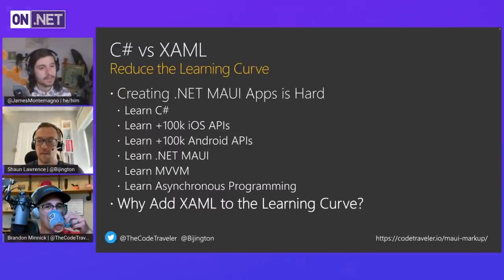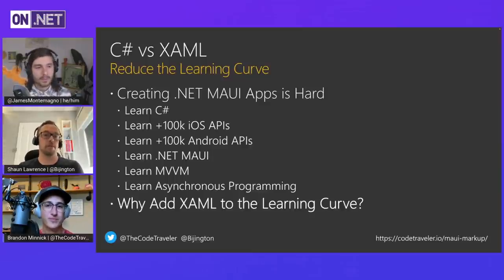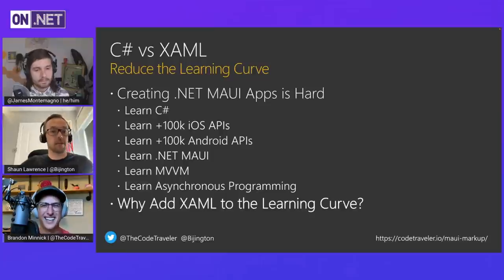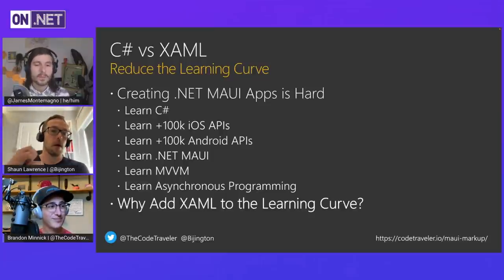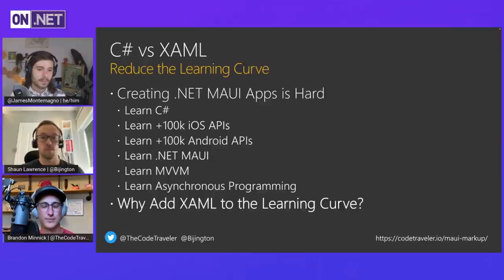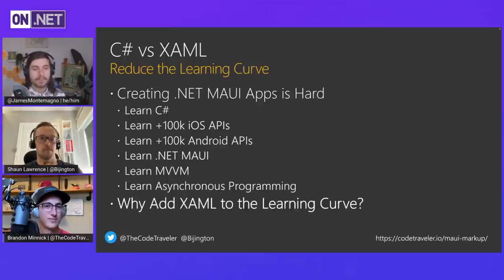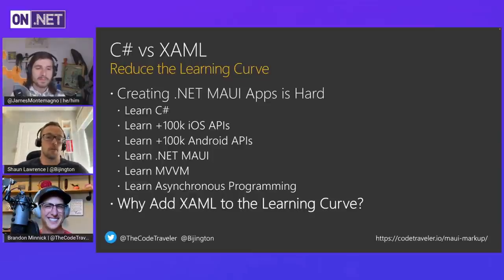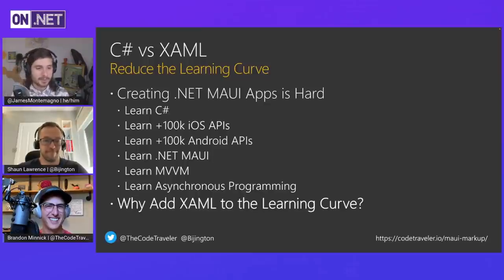One big selling point is that C# markup reduces the barrier to entry. If you're coming in to learn .NET MAUI, you're going to have to learn C# regardless of whether you use XAML or not. By removing the XAML element, that's one extra thing you don't have to consider. When you think about all the concepts people have to learn — platform-specific APIs, MVVM patterns, asynchronous programming — if we can remove any part of that learning curve, it makes the journey easier.